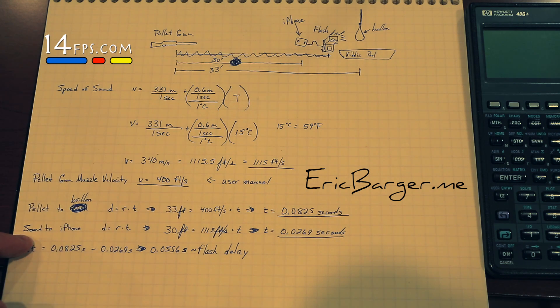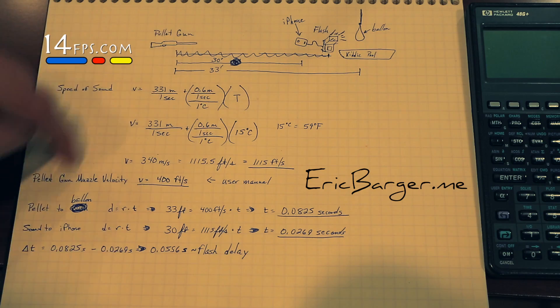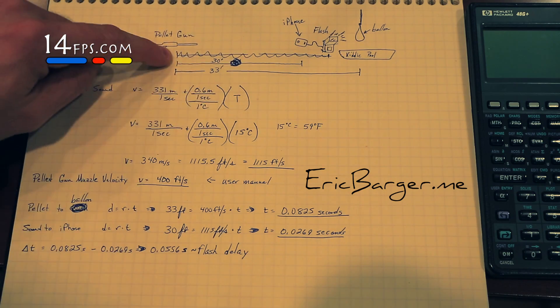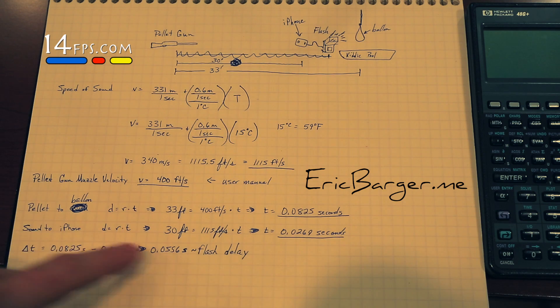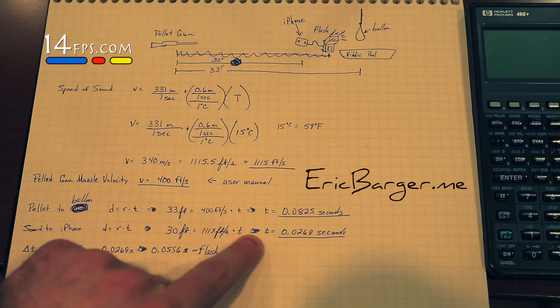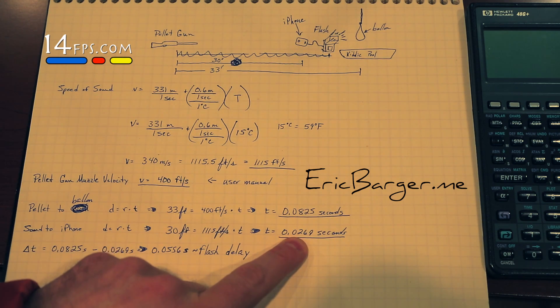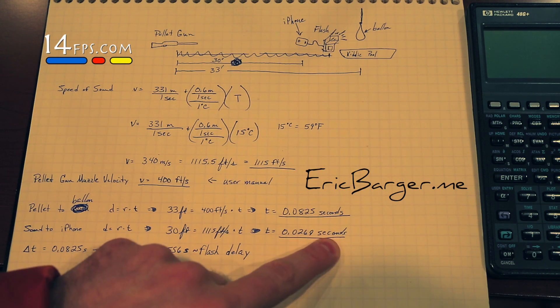The time for sound to travel to the iPhone, it had to go 30 feet. So sound started here, goes 30 feet to the iPhone. Again fill out the equation D equals RT. We got 0.0269 seconds.